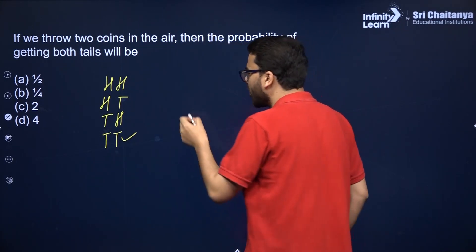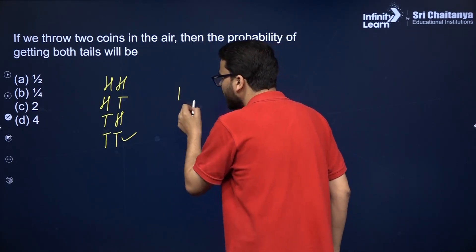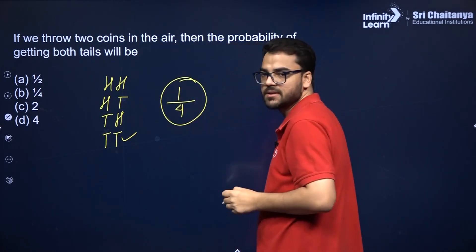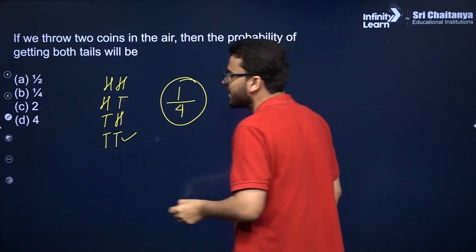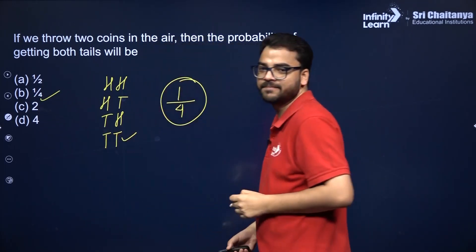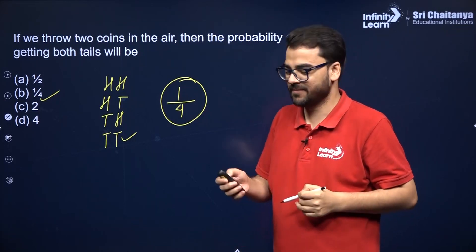The probability is number of favorable outcomes upon total number of possible outcomes. So the answer is 1 by 4 over here. Let's take the next question.